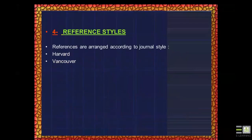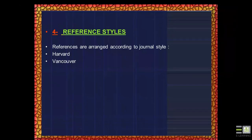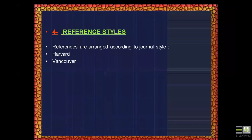Modern computers and reference management software simplify switching between citation styles. Vancouver style uses sequential numbers in the text, while Harvard style uses author names and year within the text, sorted alphabetically. There are 20 to 30 citation styles in total. You must follow the style of the journal you are submitting to — if you submit in the wrong style, the journal will reject it immediately. Also, always number all pages of the manuscript.